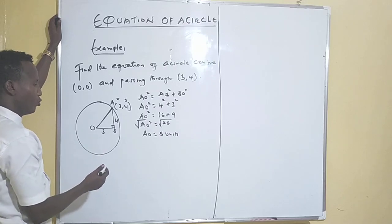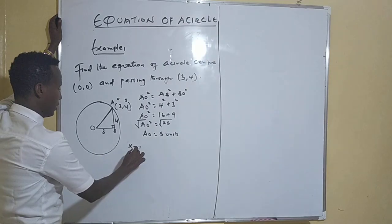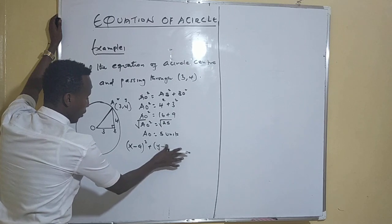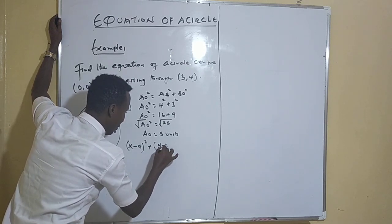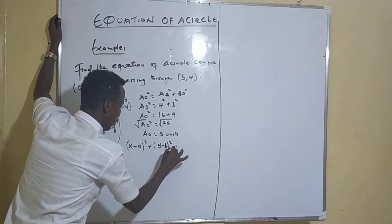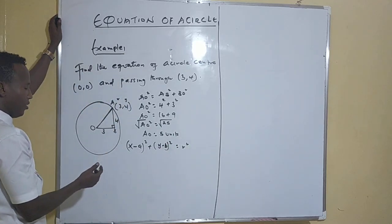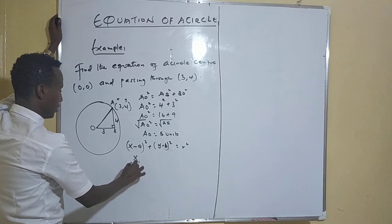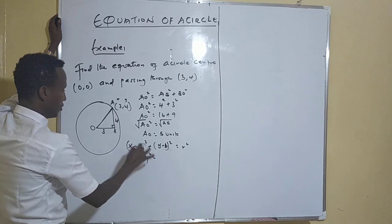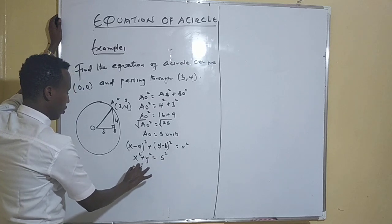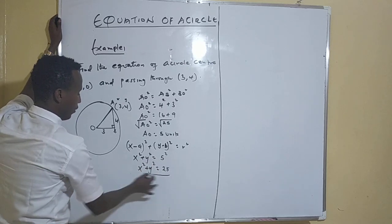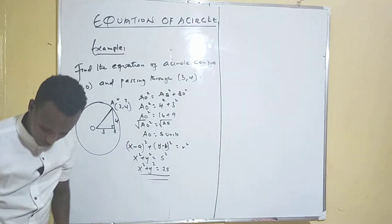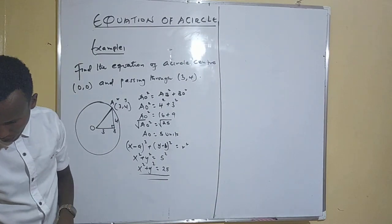Since the center is at the origin, we don't have a shift, so the equation of a circle takes the format x minus a squared plus y minus b squared equals r squared. Because the center is zero, zero, we simply write x squared plus y squared is equal to five squared, which gives us x squared plus y squared equals twenty-five. That is the final answer.